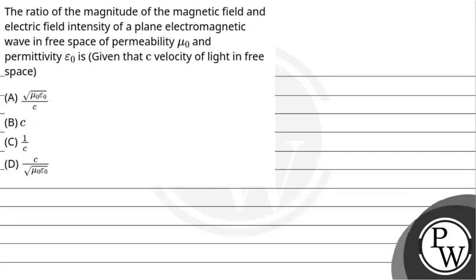Hello, let's head out to questions. The question says the ratio of magnitude of the magnetic field and electric field intensity of a plane electromagnetic wave in free space of permeability mu naught and permittivity epsilon naught is given that c velocity of light in free space.